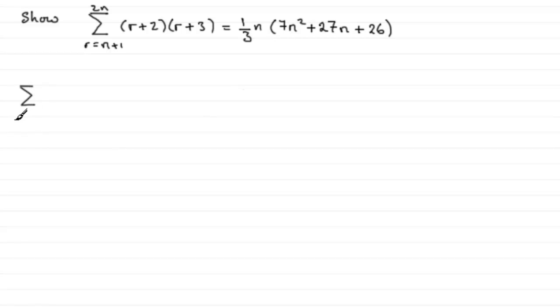So we've got the sum of r going from n+1 to 2n of (r+2)(r+3). Well, we think of doing the first 2n terms. So we look at the sum of r going from 1 to 2n of (r+2)(r+3).